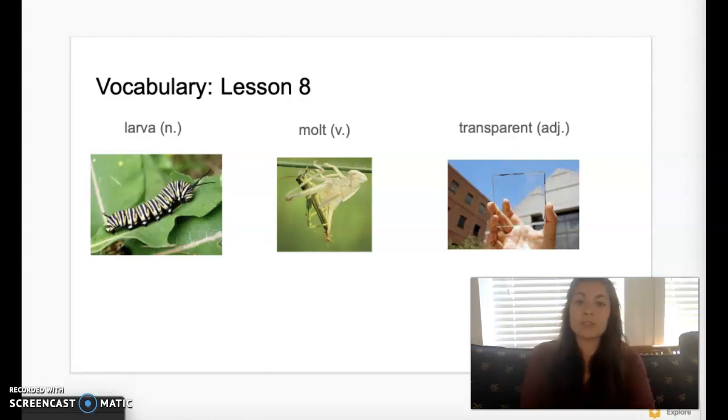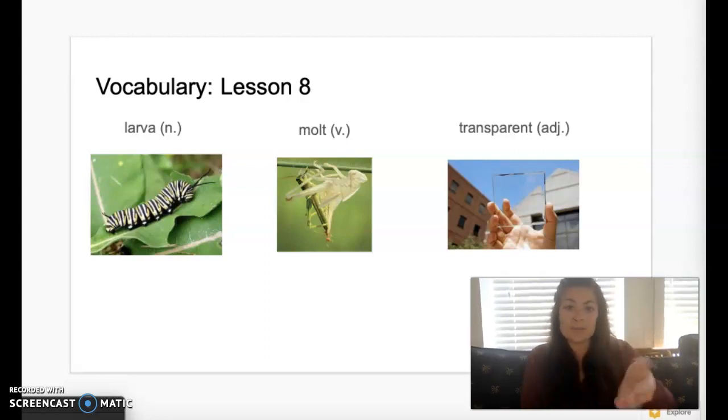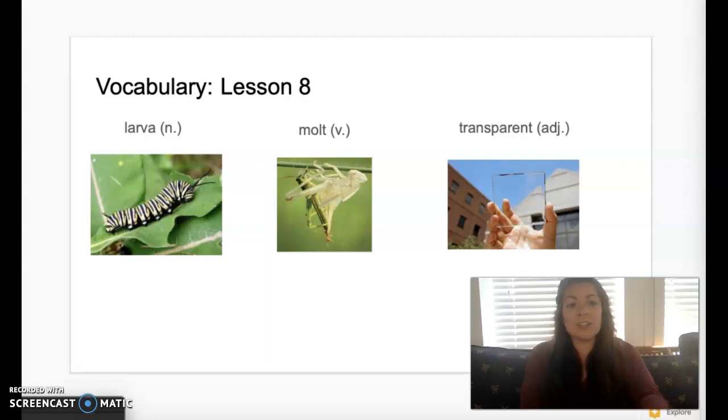Our first vocabulary word for today's story is the word larva. Repeat after me, larva. Larva is the early form of an insect that is not completely developed yet. Our second vocabulary word is the word molt. Say molt. Molt means to shed an outer layer. Our last vocabulary word is the word transparent. Say transparent. Transparent means something that is clear or see-through.